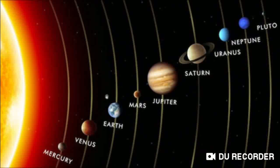Besides the planets, the solar system also includes various other heavenly bodies. The planets are Mercury, Venus, Earth, Mars, Jupiter, Saturn, Uranus, and Neptune.